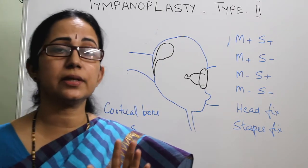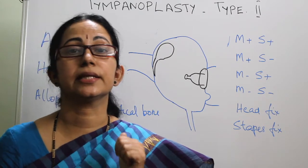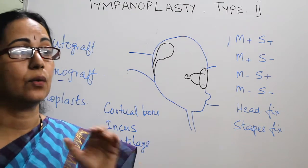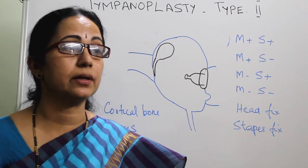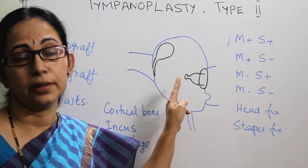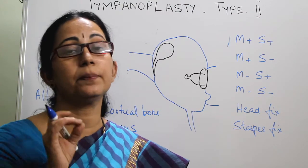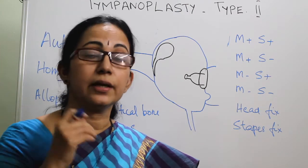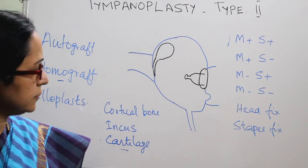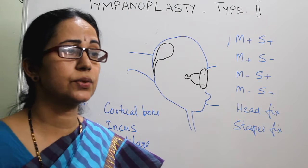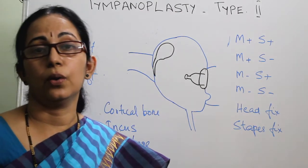The advantages of autograft are: fully biocompatible, less chance of extrusion, easily available, and no chance of infection. The disadvantages are: lack of availability, especially in case of chronic discharging because there will be erosion of the entire incus. If there is cholesteatoma inside the ear, even with less erosion of the incus, there is a chance of microscopic infiltration of squamous epithelium into the incus bone and presence of residual cholesteatoma. Also, reshaping the incus causes prolonged operation time. If using cartilage, there is a chance of resorption and loss of integrity in the long run, and chance of fixation of the ossicle to the middle ear walls.